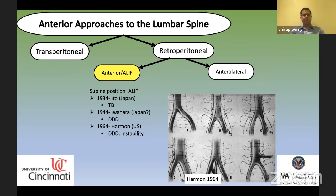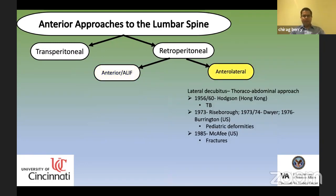In 1944, Evahara described retroperitoneal ALIF for disc degeneration, and in 1964 Harmon described it for degenerative instability. Harmon also described retroperitoneal vein anatomy and variations, which remain important today for OLIF approaches. Then came the anterolateral techniques, which were the direct precursor of what we now know as OLIF approaches, first described by Hodson in 1956 and 1960 for tuberculosis.